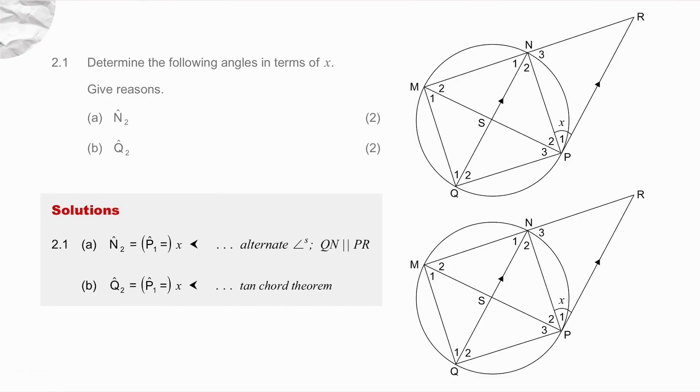Question 2.1. The first angle they want you to calculate is angle N2. You will notice that you have alternate angles. Angle P1 and angle N2 are equal to each other. So angle N2 is x because of alternate angles and don't forget to put the parallel lines down.